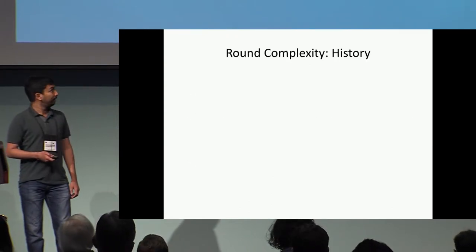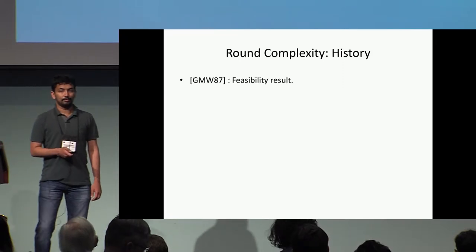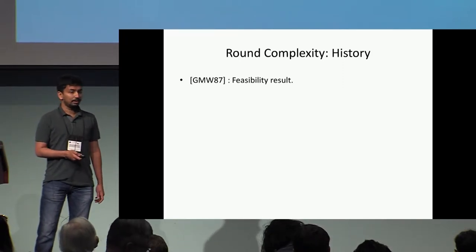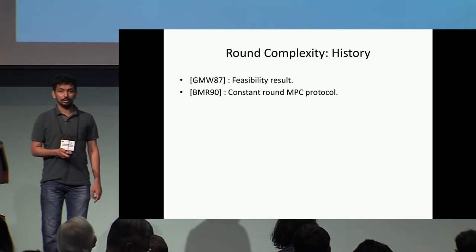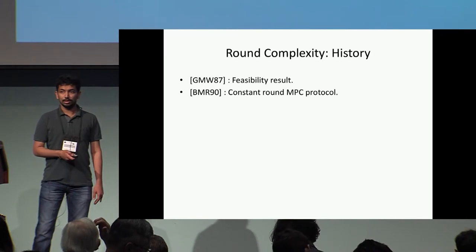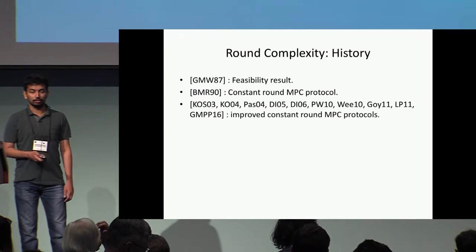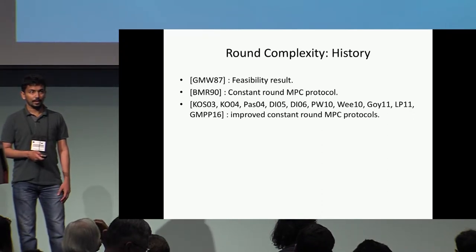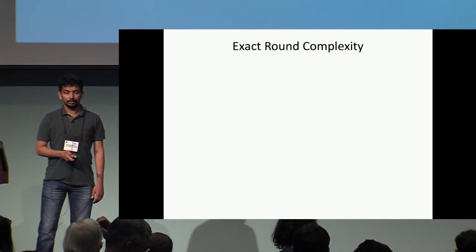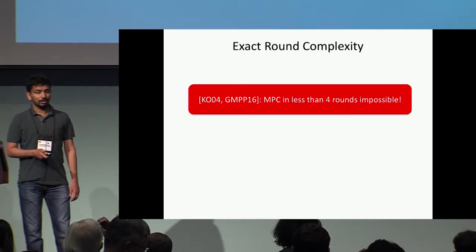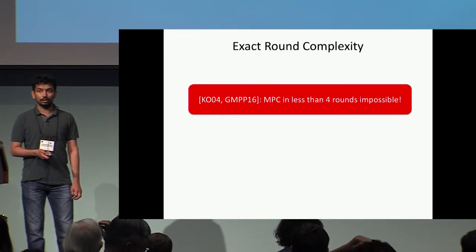With this setting, let's look at the brief history of the round complexity of MPC protocols. The first was the seminal work of Goldreich et al., which gave a feasibility result in polynomial rounds. Then Beaver et al. introduced the study of constant-round MPC protocols, improved over a long line of work. As for the exact round complexity, the works of Katz–Ostrowski and Garg et al. showed that MPC in less than four rounds is impossible.